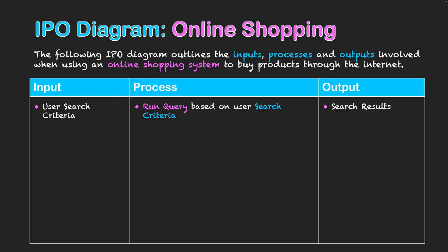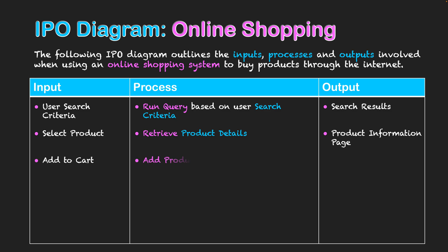From here, the user will select a product, and every time they click on a product the system will need to retrieve those product details stored about the product in its database. The output back to the user from the system will be the specific product's information through its information page on the online shopping website.